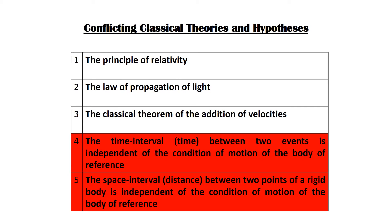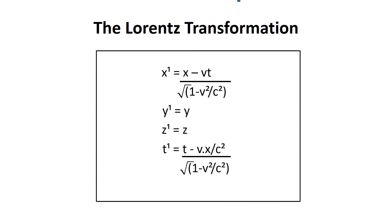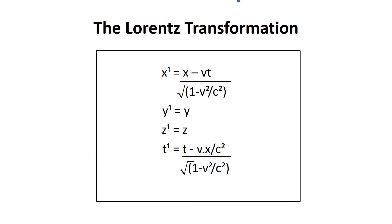The theory of relativity will no longer use the Galilei transformation and will discard the classical hypotheses regarding time and distance. Instead, it will use the Lorentz transformation to provide a solution that ensures the law of transmission of light in vacuo does not contradict the principle of relativity. The ramifications of the use of the Lorentz transformation would be profound, including time dilation, length contraction, and the increase of mass — all of which will be covered in this series.